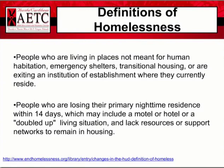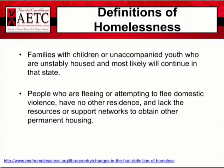Also, people who are losing their primary nighttime residence within 14 days — which may include a motel, hotel, or double-up living situation — and lack resources or supporting networks to remain in housing. HUD had previously allowed people being displaced within seven days to be considered homeless; this is now 14 days. Additionally, there is a new category of homelessness that applies to families with children or unaccompanied youth who have not had a lease or ownership interest in a housing unit in the last 60 days or more, have had two or more moves in the last 60 days, and who are likely to continue to be unstably housed because of disability or multiple barriers to employment. This category is similar to current practice regarding people fleeing domestic violence.